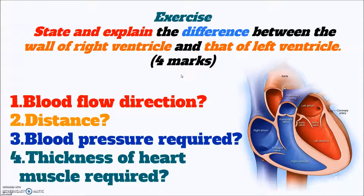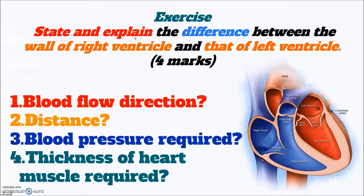That's almost the end of the video. Now we have an exercise. The question is: state and explain the difference between the wall of the right ventricle and that of the left ventricle, for four marks. Remember the question type 'state and explain' from the past video. The first step is to state the difference between the wall of the right ventricle and the left ventricle, and then explain. It should be one mark for the statement and three marks for the explanations.